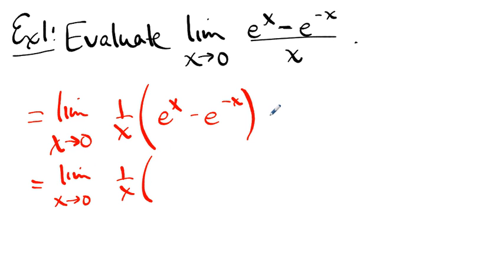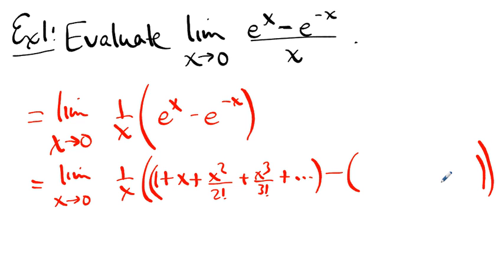We know that the series for e to the x is one plus x plus x squared over two factorial plus x cubed over three factorial plus and so on. Minus, well we know what e to the minus x is. E to the minus x is one minus x plus x squared over two factorial minus x cubed over three factorial and so on.